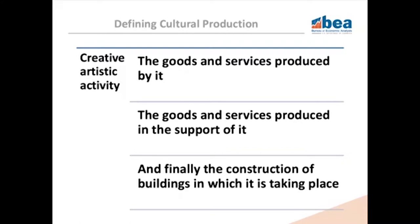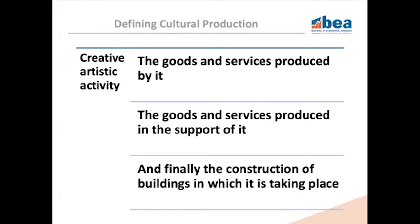With this definition in mind, the statistics are presented under two broad headings. The core category includes commodities in which output is identified as primarily contributing to arts and culture — it includes performing arts, museums, design services, and arts education. The supporting category consists of commodities that support the core category through publication, dissemination of the creative process, or other supportive functions — for example, event promotion, printing, and broadcasting.